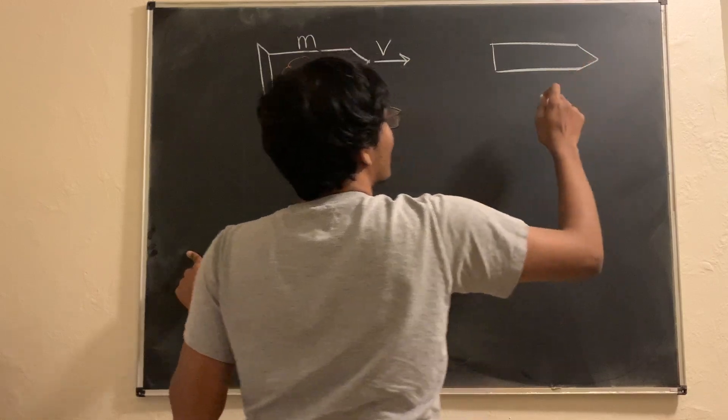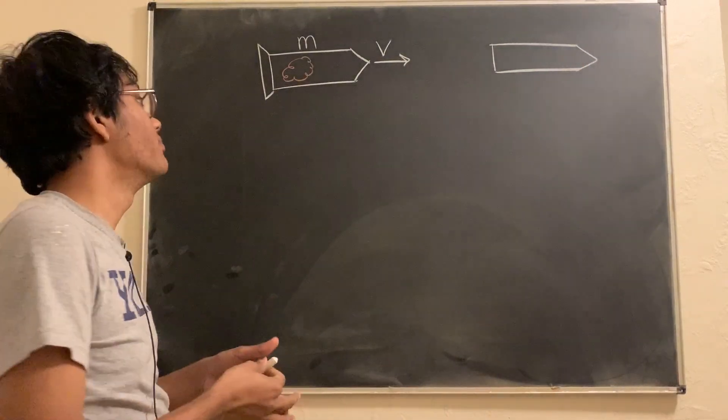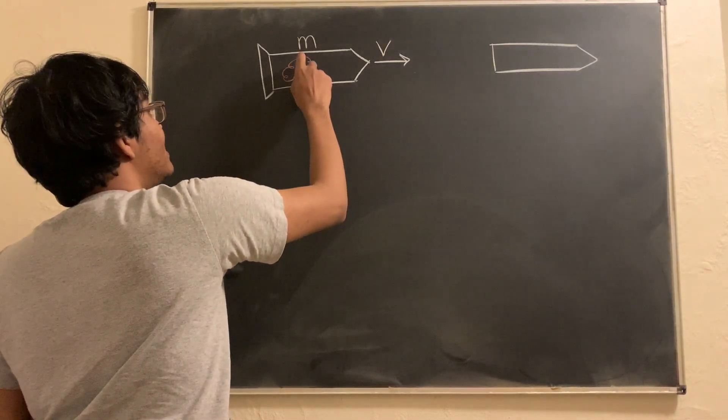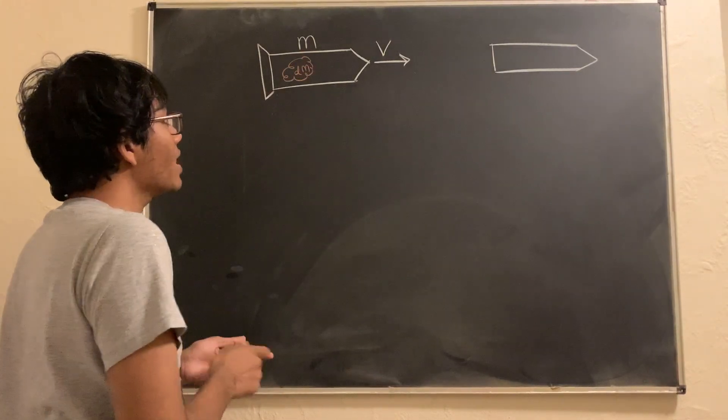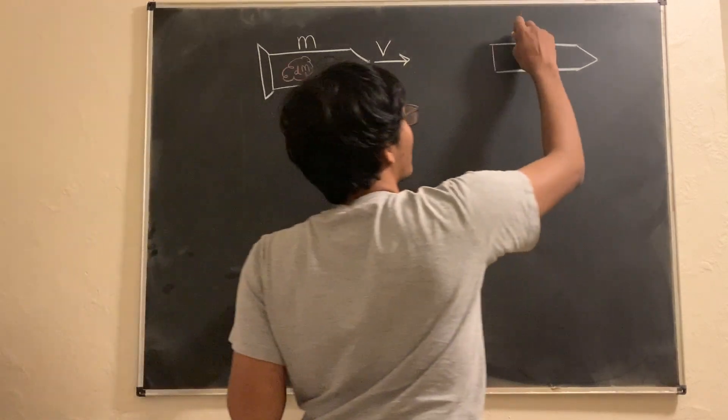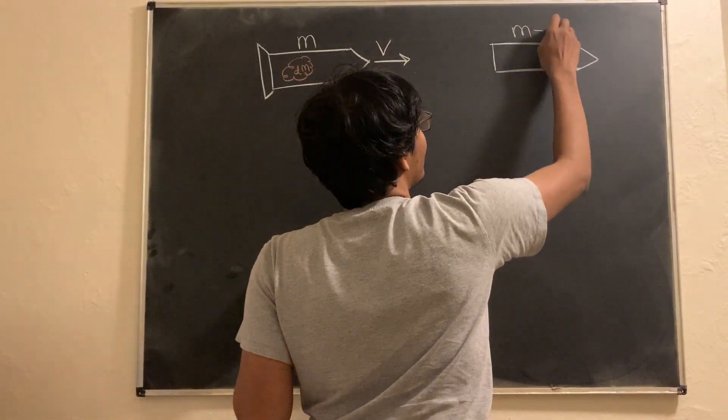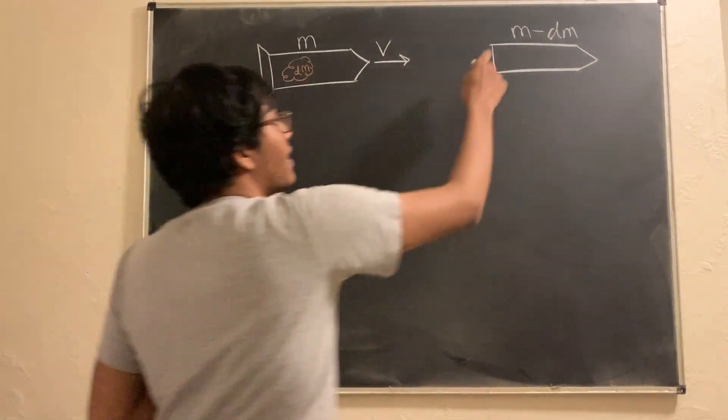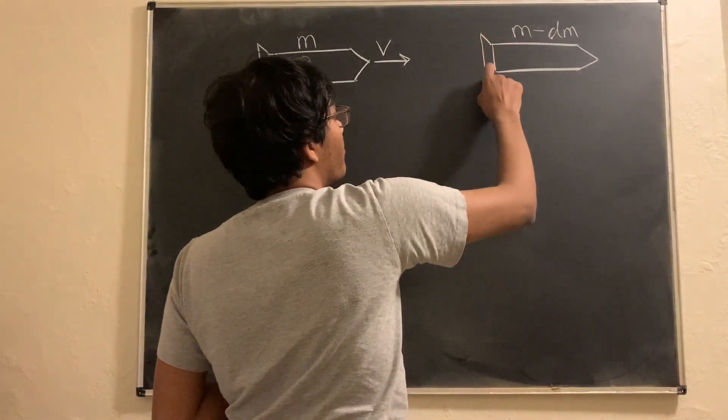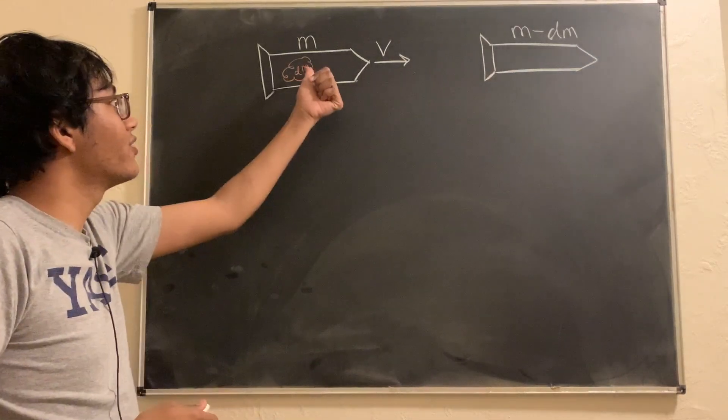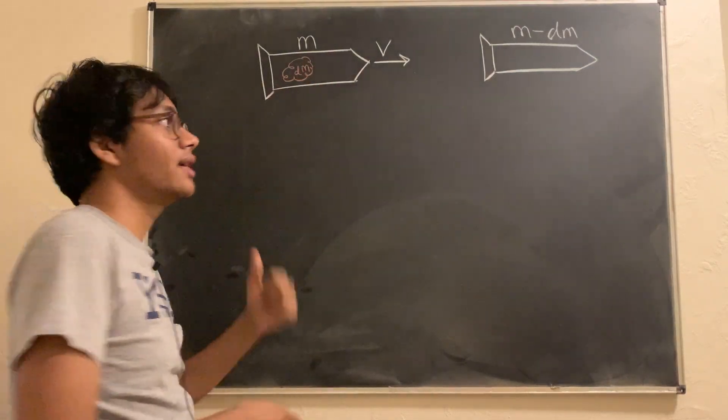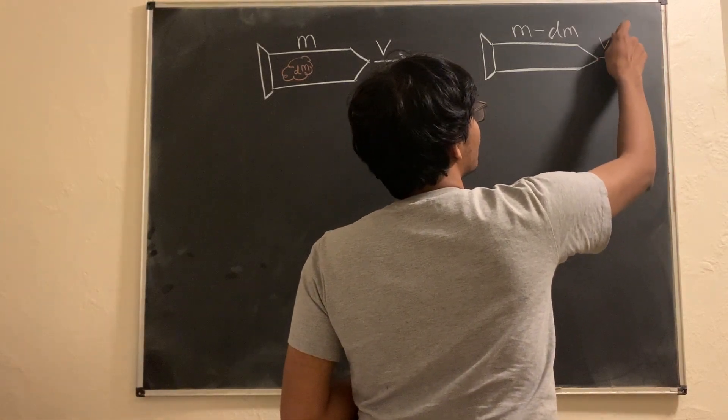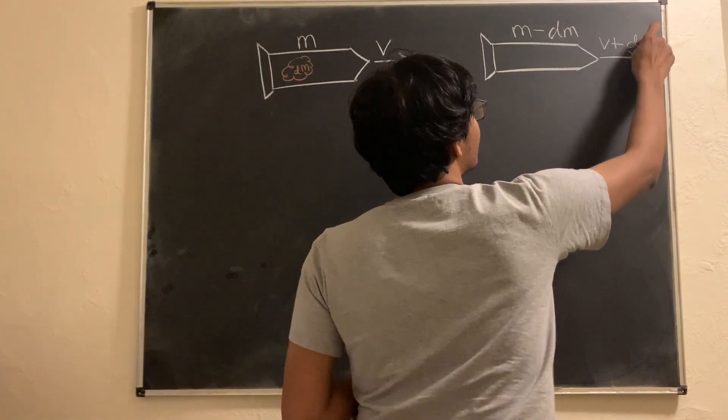After the rocket ejects its fuel, it's going to lose some mass. It's going to lose a little amount of mass. Let's call it dm. So, the new mass of the rocket is going to be M minus dm. Now, since the rocket has lost some mass and this mass has gone out this way, the rocket is going to gain some velocity. In fact, its new velocity is going to be V plus delta V.